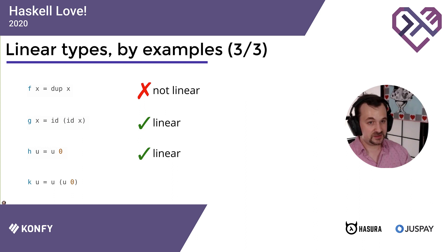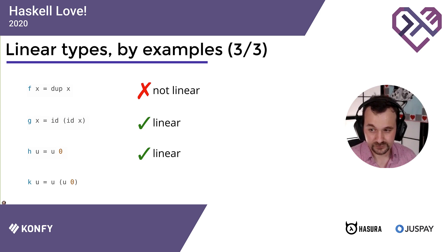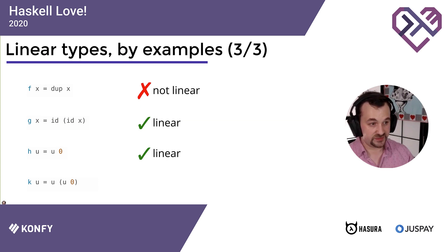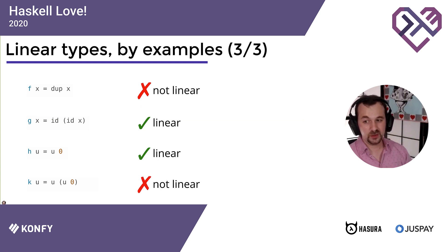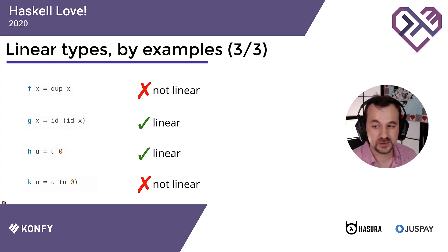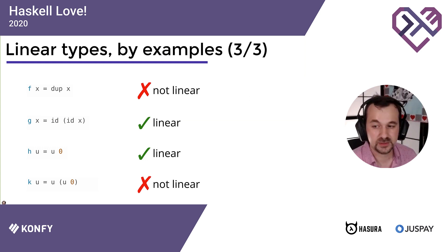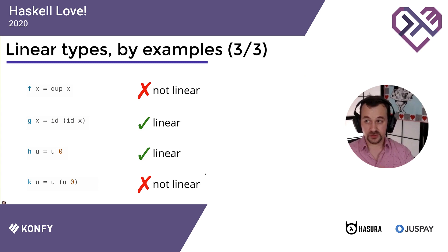So correspondingly: is calling u twice linear? That last function has people divided. No, it's not linear — it uses u several times, and that is just not legal. Someone asks: would the last one be linear if u were linear? No — it's the usage of u that is not linear. It doesn't matter whether you use a linear function or not; we are not using u linearly. But hold that thought — it may become clearer later.